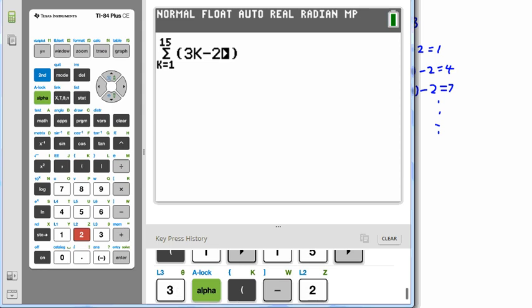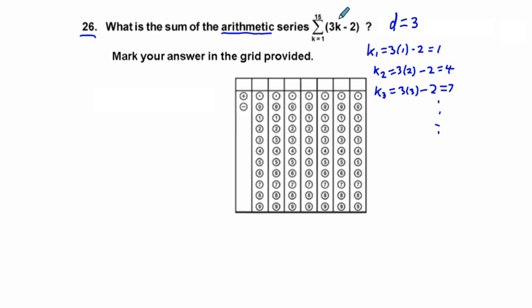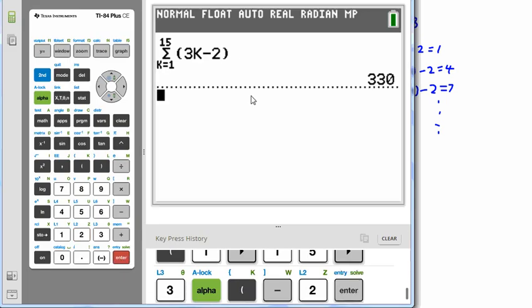And then we can just double check to make sure we entered everything correctly. 3k minus 2. Yeah, that looks good. So now we just press our button in our calculator. We get 330. So we will say equals 330.